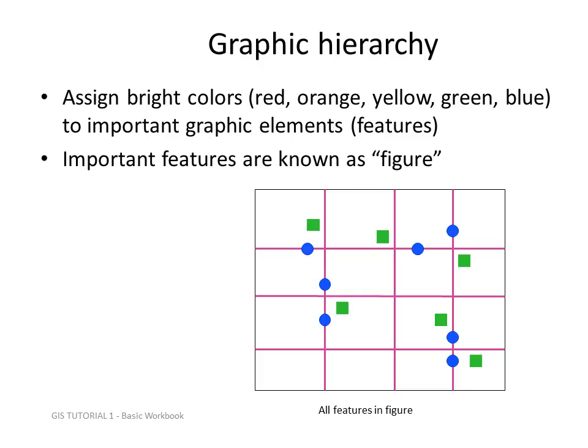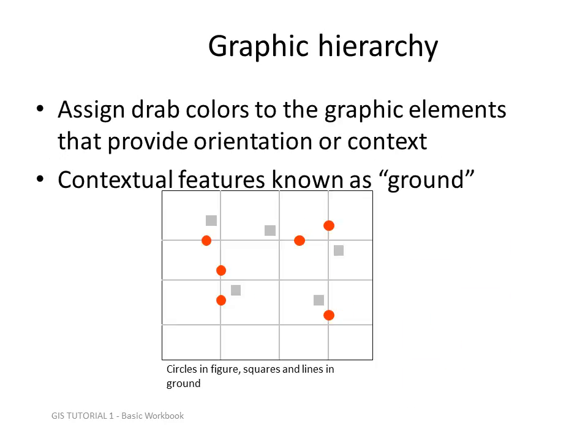Graphic hierarchy is where bright colors are assigned to important graphic elements, called features. Important features are known as figure in graphic design. You can assign drab colors to the graphic elements that provide orientation or context. Contextual features are known as ground.